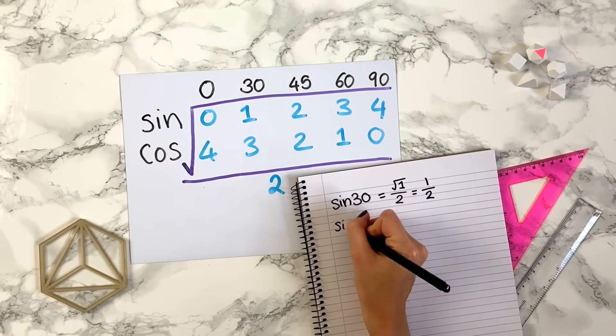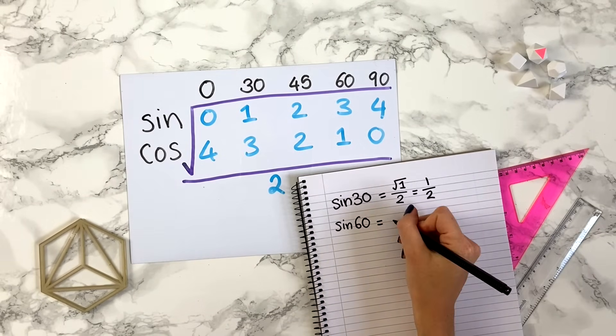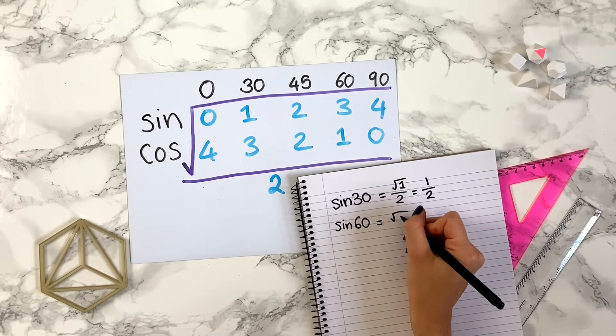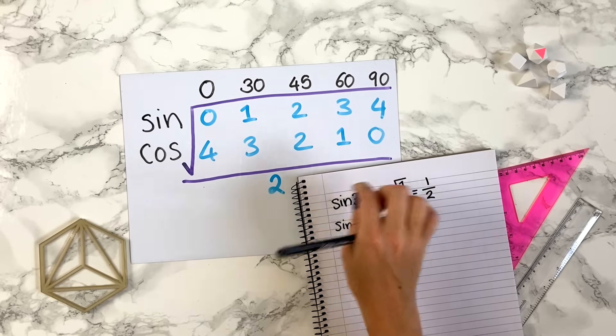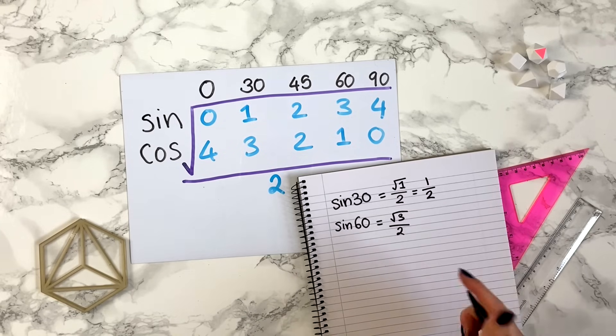Let's try sine 60. We take the square root sign, and then sine 60 gives us the 3, and then we divide by 2 always. So sine 60 is root 3 over 2. We can't simplify that anymore, so that's just the answer.